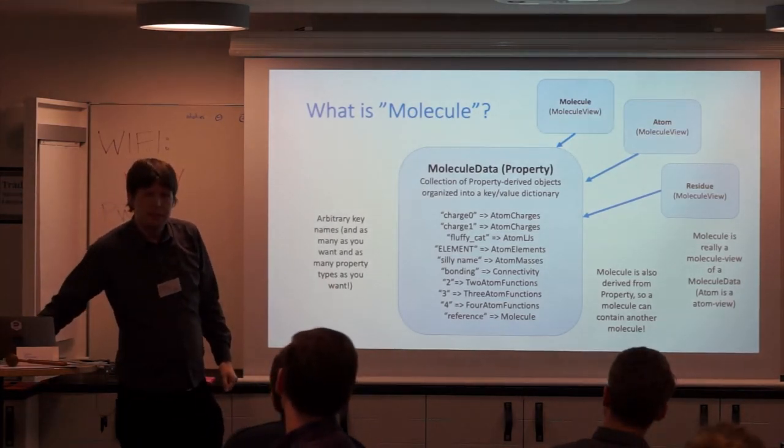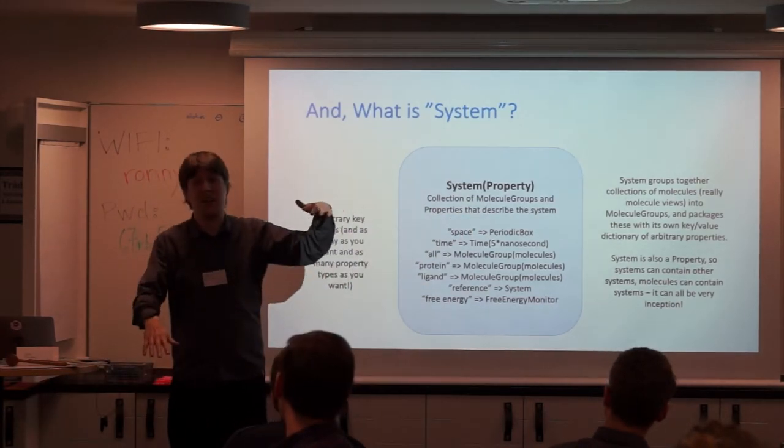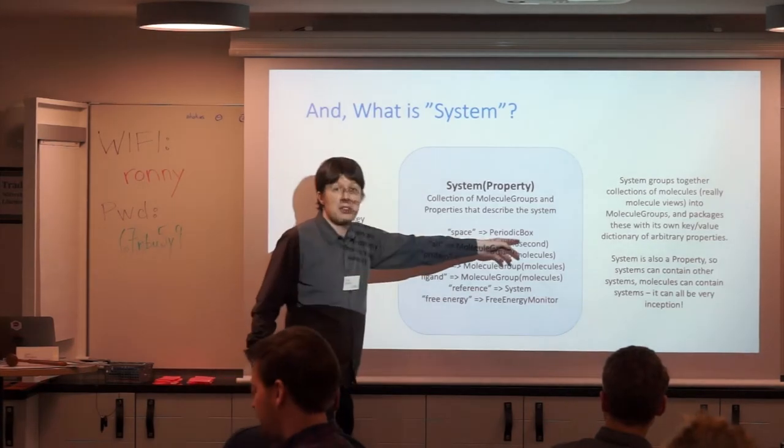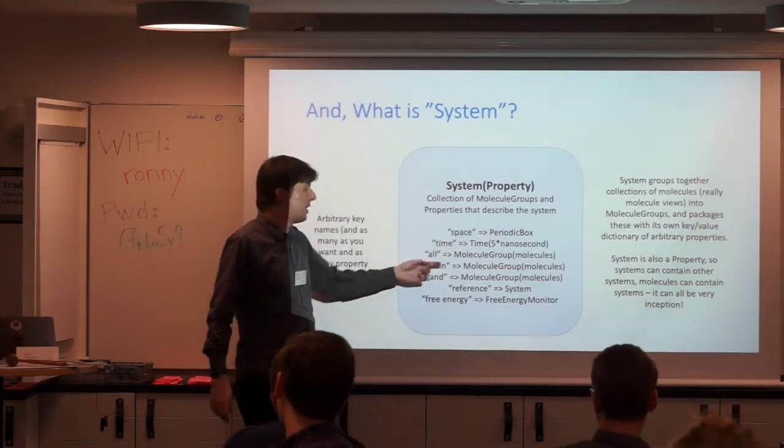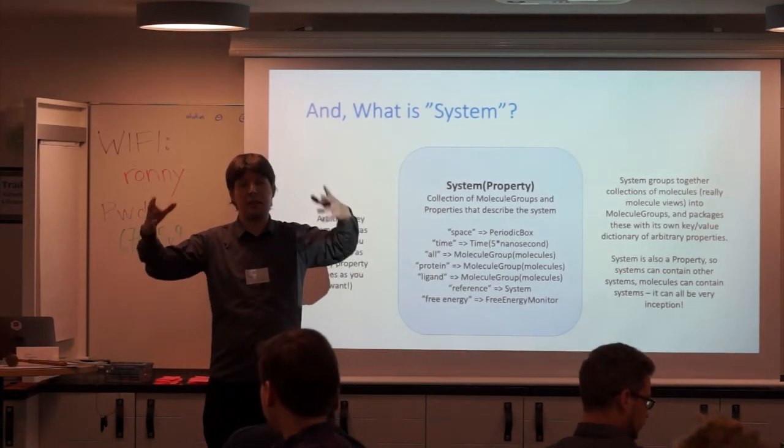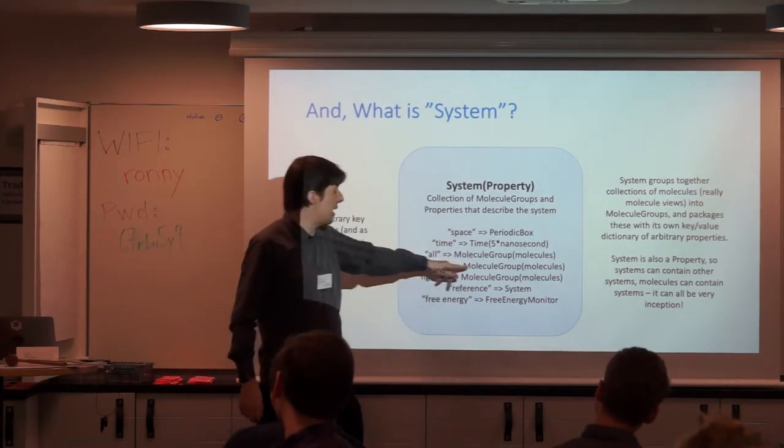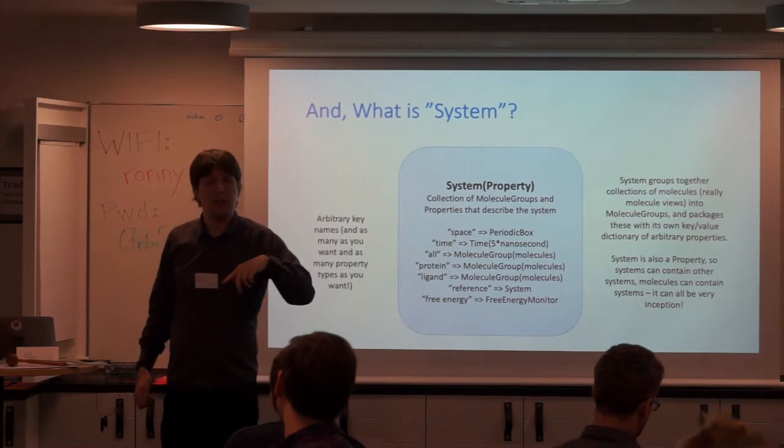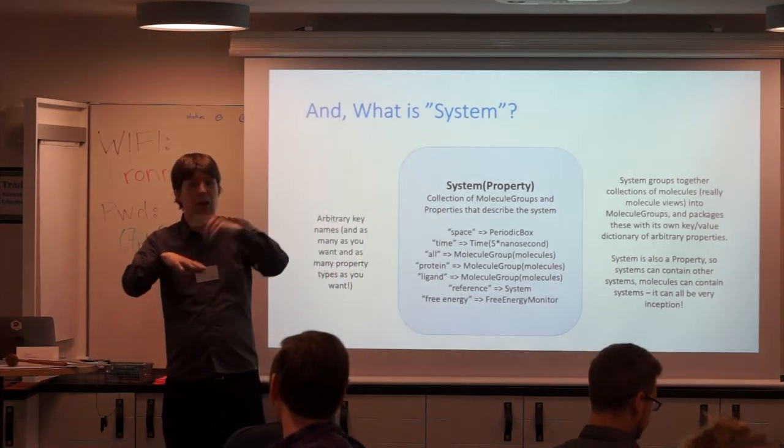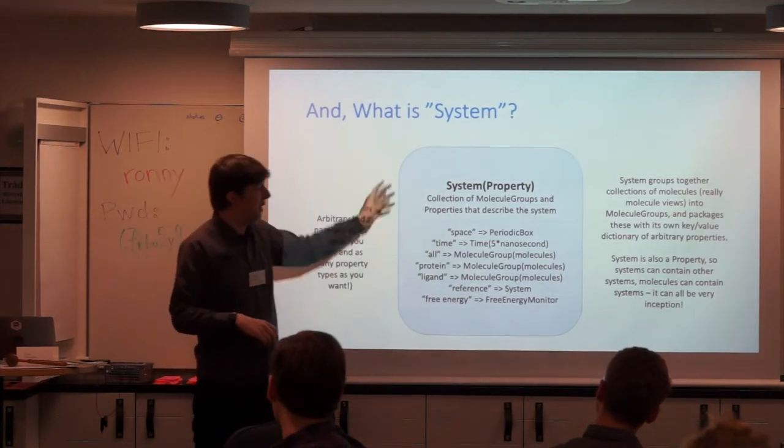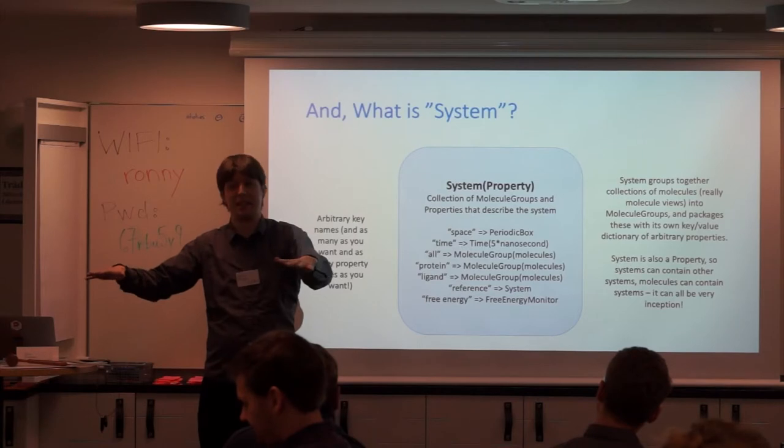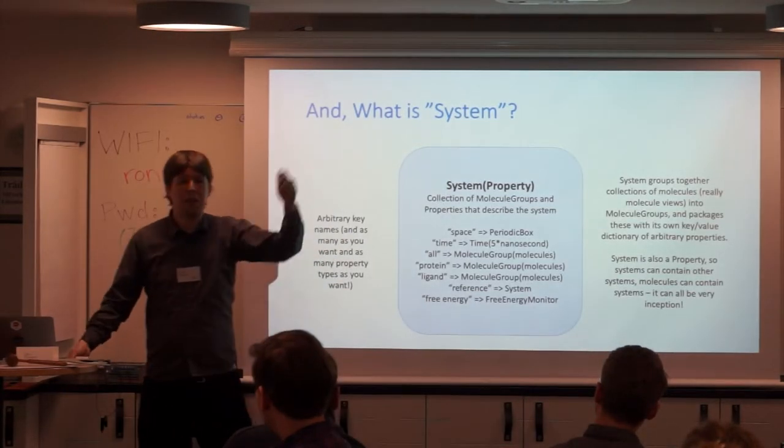So that's molecule. What is system? System shock horror is yet another property. A molecule can contain an entire system if it wanted to. But it's much better to have the system containing molecules. The system contains properties. So space is a periodic box. Periodic box again is a property. Time is a time. All is a molecule group. A molecule group shock horror is a property that contains lots of molecules. And so all is all of the molecules in the system. But because the data format actually does implicit sharing, it means that protein can contain just the molecules in the system that we designate as being protein. But the molecule data is not actually duplicated. The molecule is still only there once. So the system understands the concept underneath of what is the same data. So you end up tagging data all over the place, aggregating it, sharing it. And as I said, system is a property. So that means that one system can contain their own systems, which can contain molecules, which can contain systems, which can infinitely go on in an inception recursion. But as a data format we don't mind.